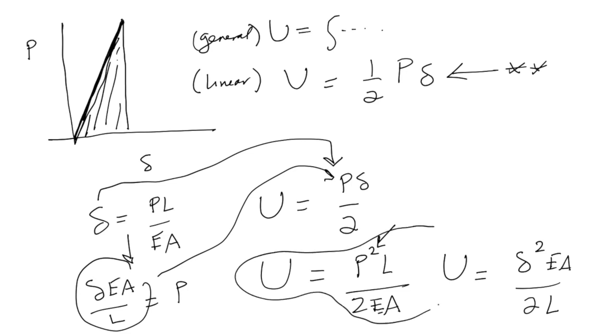So the important concepts so far that we've learned are this idea of external force, which is the work done by the external loads, in this case P, and then we learned this idea of strain energy, which is essentially the work done by the internal forces or the stress and strain. And if they're in mechanical equilibrium and there's no other energy generated by any other process, then big U is equal to big W, and then you can begin to relate the strain energy to the applied loads. That's all that we've done so far.